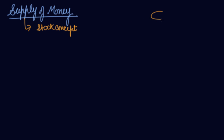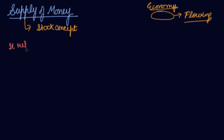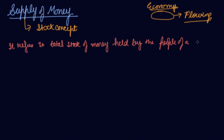The money which is flowing in your economy is the supply of money. It refers to total stock of money held by the people of a country at a point of time. The amount of money which people have with themselves at a particular point of time is the supply of money.